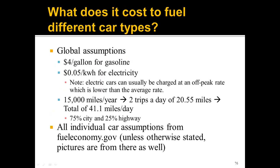What we really want to answer is: what does it cost to fuel these different car types? For all of our cars we'll use the same assumptions: $4 a gallon for gasoline and $0.05 a kilowatt hour for electricity. Electric cars can usually be charged at off-peak rates at night, which is lower than the average rate. We'll assume 15,000 miles of driving a year and two trips a day — that equates to 20.55 miles per trip. That'll be important when we get to the plug-in hybrid. 75% of driving is in the city and 25% is on the highway. All individual car assumptions are from fueleconomy.gov.